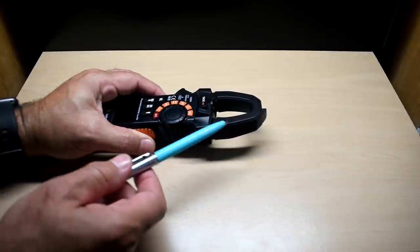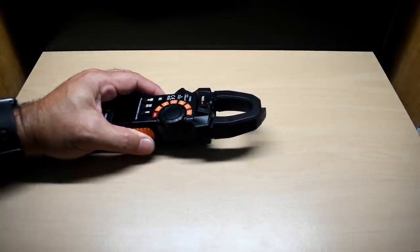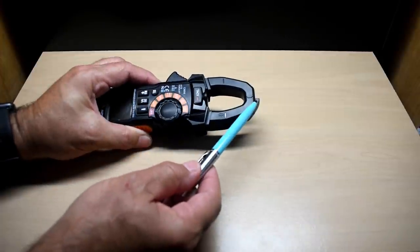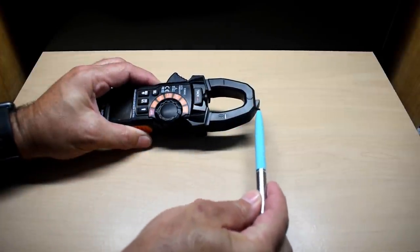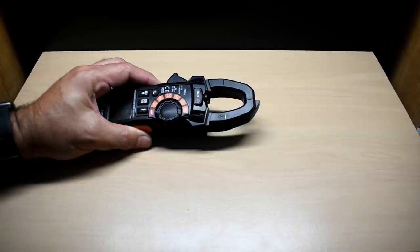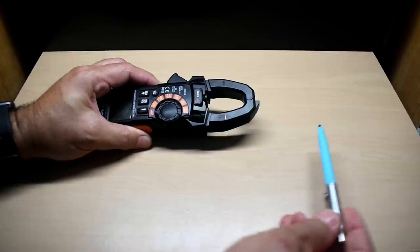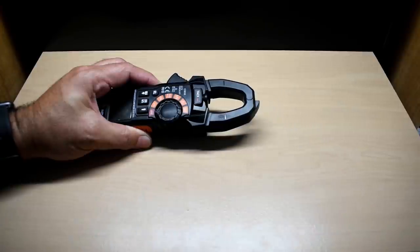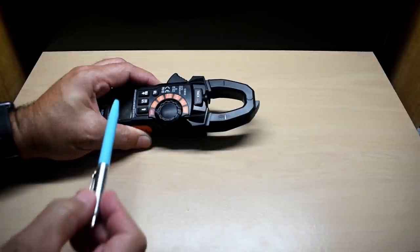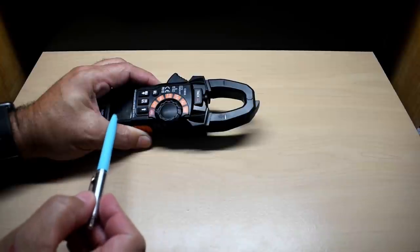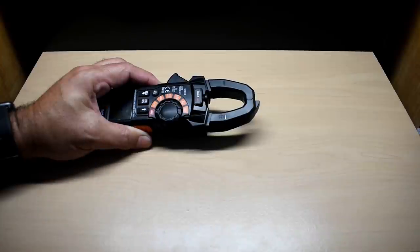And not only is the flashlight useful if you're trying to clamp around wires inside of a panel but you notice the very end has this probe that sticks out and what that is is an AC voltage sensor so you can take this tip, put it right against the wire inside that notch, and if the wire is live you're going to see an indication on the display and it's also going to beep.